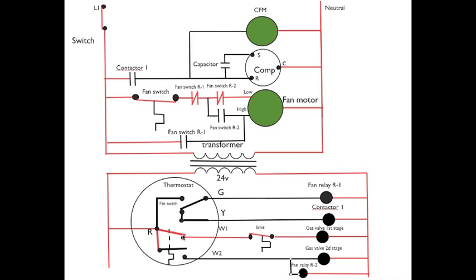So the first stage thermostat power passes through it, the normally closed limit energizes a gas valve in first stage. Fan switch closes as the heat exchanger warms, passes through the normally closed fan switch R1 and also through the normally closed fan switch R2 to energize the fan and low speed. Note this fan relay is not energized down here, so it does not change position.